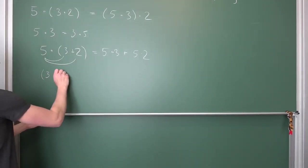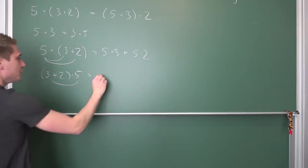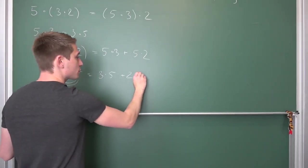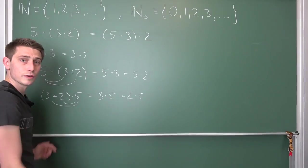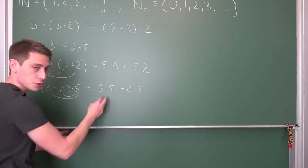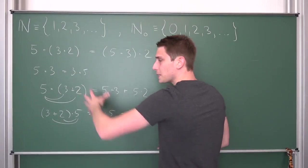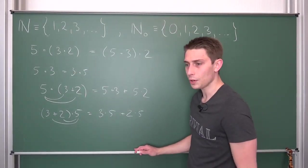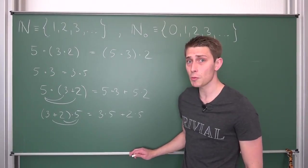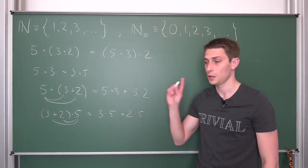For the right distributive law: we can have the quantity three plus two times five, and you take the five and multiply it to each term — three times five plus two times five. Because multiplication is commutative, two times five and five times two vary to the same result. So if you know these three basic rules — associativity, commutativity, and distributivity — you're already done with so much of high school mathematics, because so much algebra is just based on those simple rules.